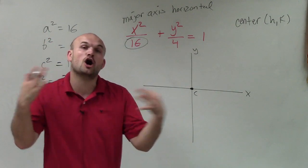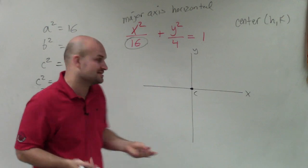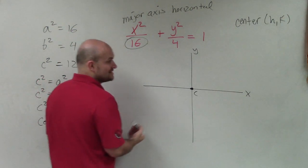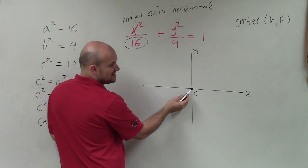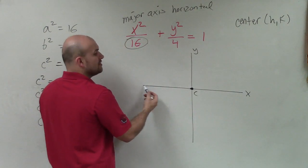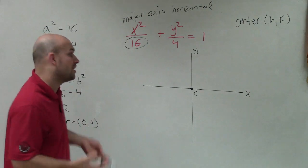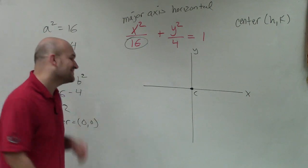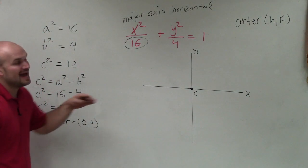So what that's going to tell me is my vertices, my foci, and my vertex are all going to lie on the major axis, therefore, which is horizontal. So since the center is already on the x-axis, I know that my foci and my vertices are also going to be on my x-axis.